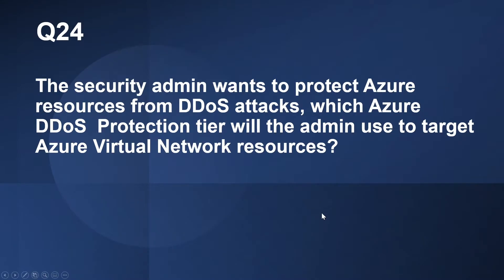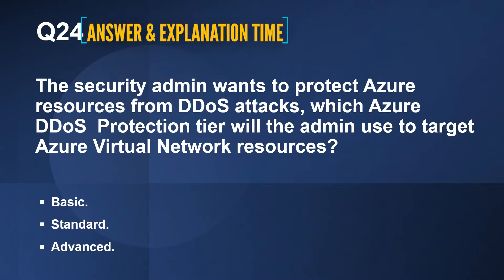Question number 24. The security admin wants to protect Azure resources from DDoS attacks. Which Azure DDoS protection tier will the admin use to target Azure virtual network resources? The options are Basic, Standard, and Advanced. The correct answer is Standard. The Standard service tier provides additional mitigation capabilities that are tuned specifically to Microsoft Azure virtual network resources.